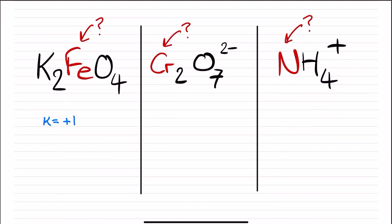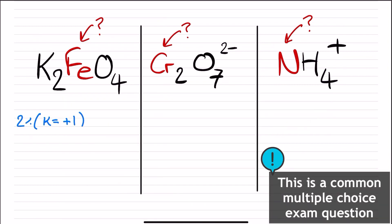Starting with this overall neutral compound on the left, the oxidation number of the potassium is plus one, and there are two of them, so this contributes plus two overall.